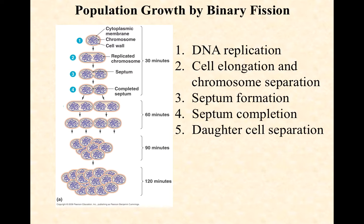Once the chromosomes are clear of one another, a septum can form — that's step three. It's an invagination, almost like taking a water balloon and looping a string around it, then drawing it in. By step four, we have a complete septum. Step five — daughter cell separation — is optional. In some species, cells completely separate before undergoing another round of binary fission. In others, the two cells remain connected and immediately begin another round of division, so after step four those cells begin DNA replication and elongation without letting go of each other.